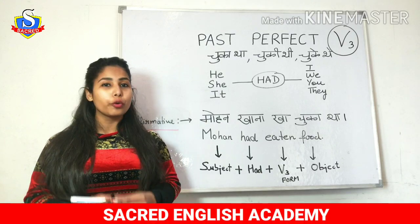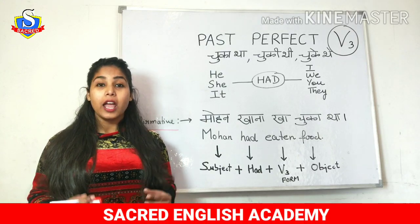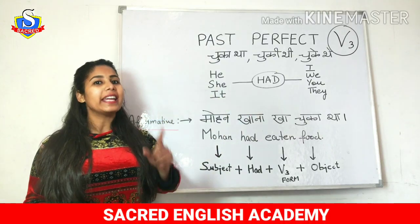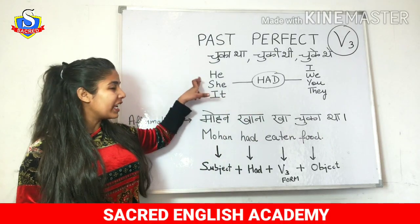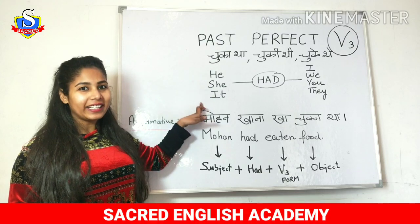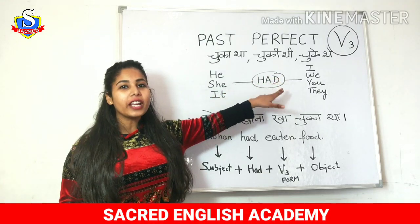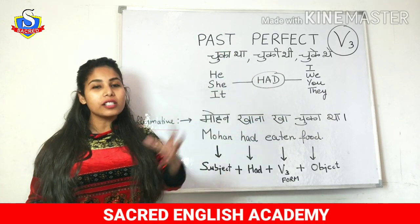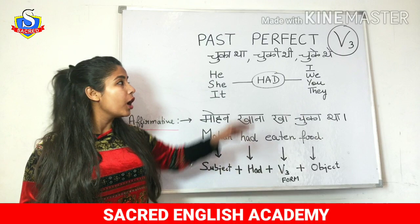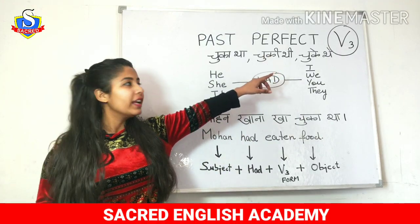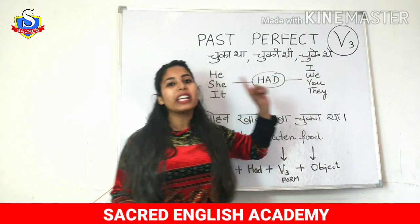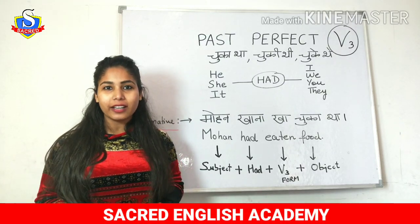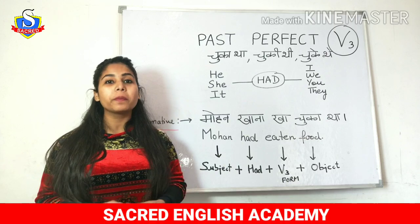So let's see what are the rules for the past perfect tense. Past perfect tense mein aapko 'had' use karna hai - with he, she, it, I, we, you, they - in sab ke saath you're going to use 'had'. And kaunsi form use hogi? That is verb third form - V3. Past perfect tense mein aapko yaad rakhna hai that you have to use verb third form.